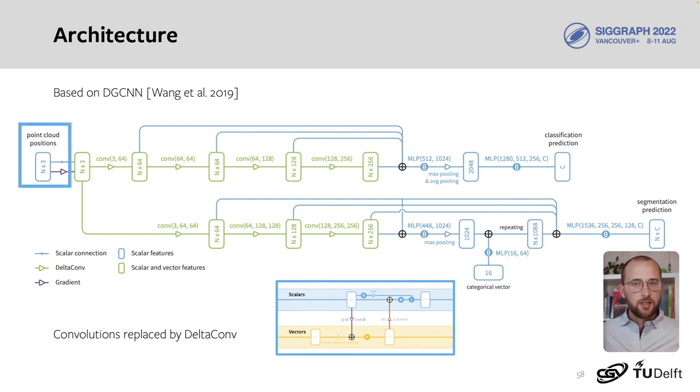You might notice that we use 3D coordinates as input to the network. We use such extrinsic features as input to compare with other works that use 3D positions. It would be possible to use intrinsic features as input, which would make the entire pipeline fully intrinsic and rotation invariant.